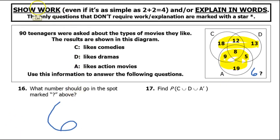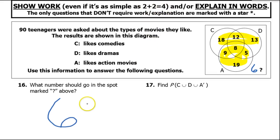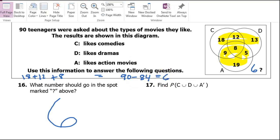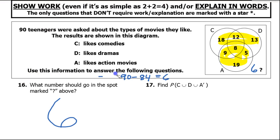I'm noticing in the directions they're asking you to show work, even if it's as simple as 2 plus 2 equals 4. So the work would just be showing the addition of all these numbers: 18 plus 12 plus 8, etc. And then you would take that number, and then you would do 90 minus 84, and that gives you 6. That's the type of work that you would show.